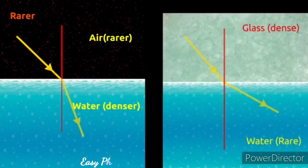When a light ray travels from glass to water, that is denser to rarer, it bends away from the normal line.